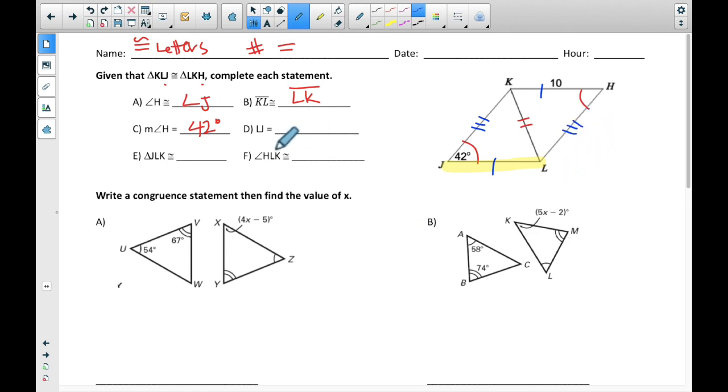So LJ, the way I just did it, LJ has one marking on it. It's here. LJ here. That goes with this one marking. It's an equal sign. That means it's looking for a number. That's 10.